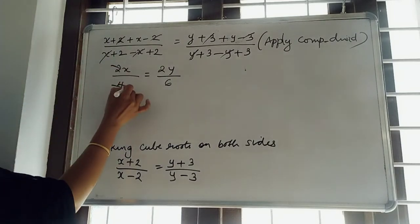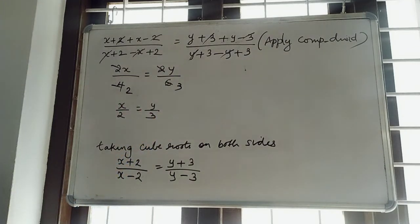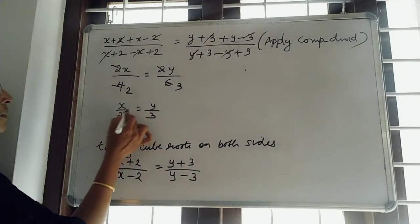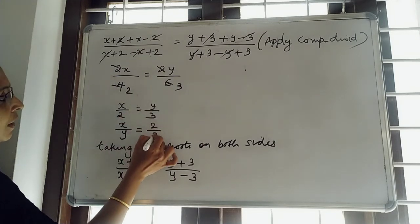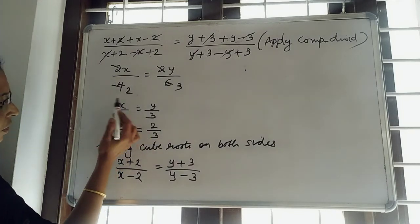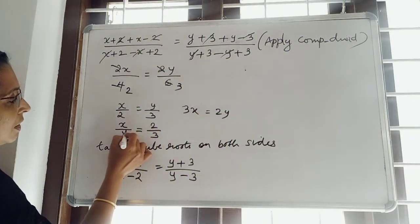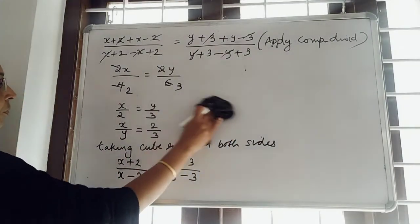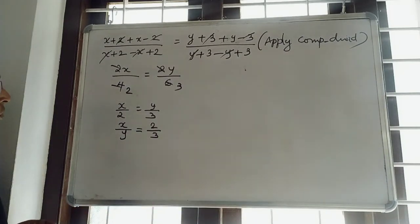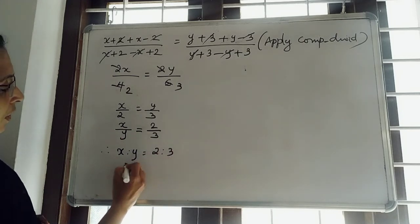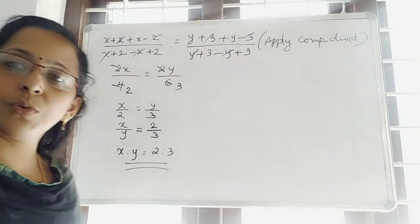So, x divided by 2 is equal to y divided by 3. We want to find x : y, so cross multiply: 3x = 2y, which gives x/y = 2/3. Therefore, x : y = 2 : 3. That is what we wanted to find out for question number 23.